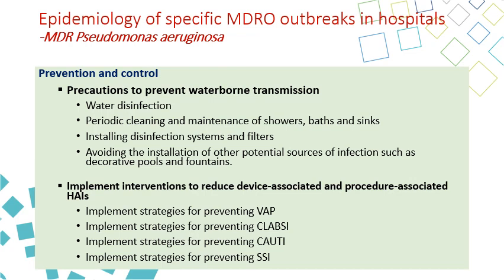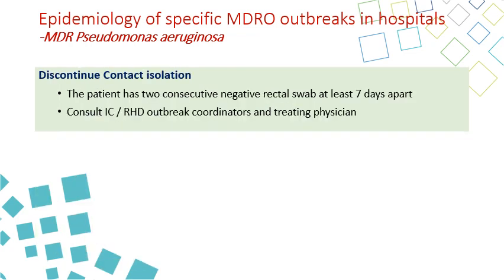Additionally, preventive measures targeting specific infections caused by Pseudomonas aeruginosa include VAP, CLABSI, CAUTI, and SSI bundles. We can discontinue contact isolation for Pseudomonas aeruginosa patients by having two consecutive negative rectal swabs at least one week apart.